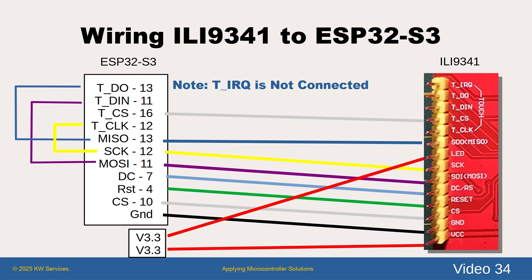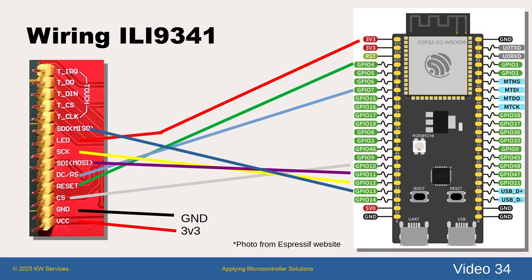We let the touch controller use the same SPI pins and control it with pin 16. On this slide the same wiring is shown but now with a picture of the ESP32 chip. By the way, some example programs define pins on the chip for the display's power and backlight. For our demo, we just wired them straight to the 3-volt power pins.